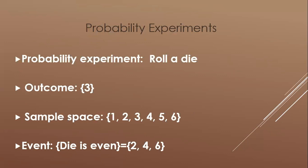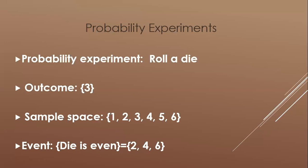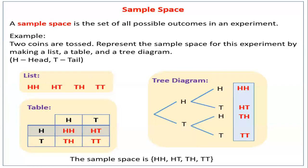Another example: rolling a die where the die shows an even number. The sample space is {1, 2, 3, 4, 5, 6}. The event is 'die is even,' so the event outcomes are {2, 4, 6}.